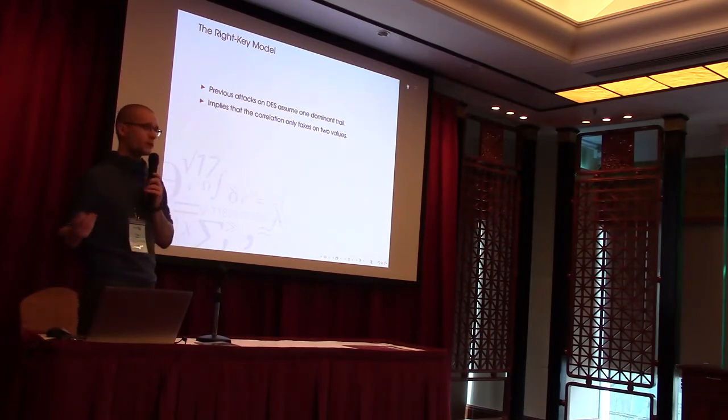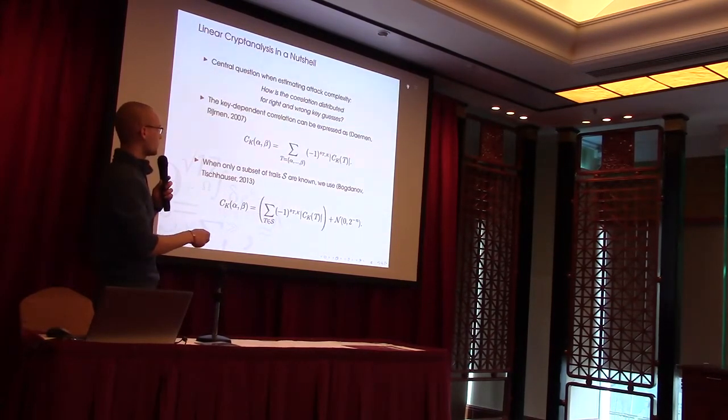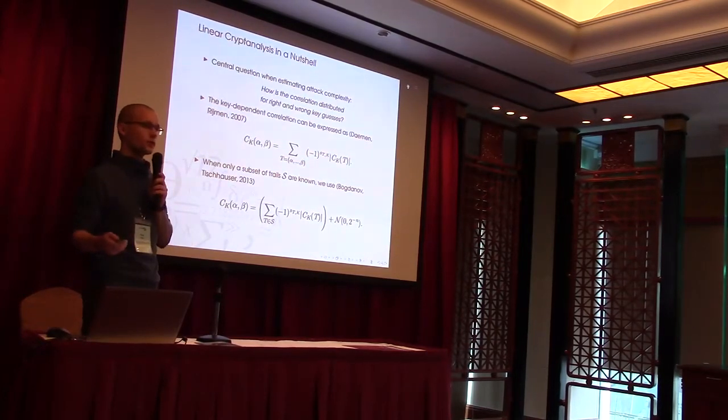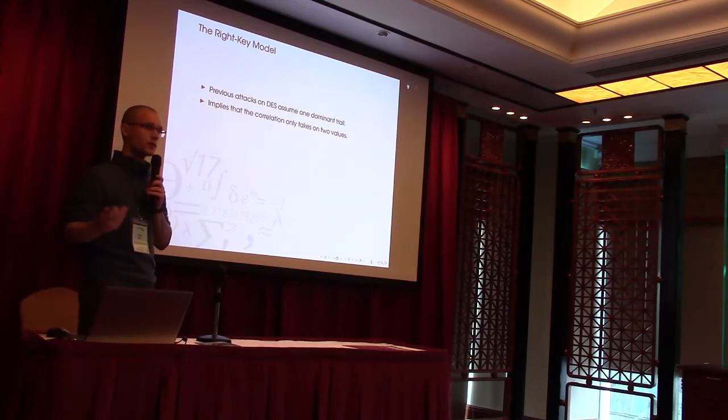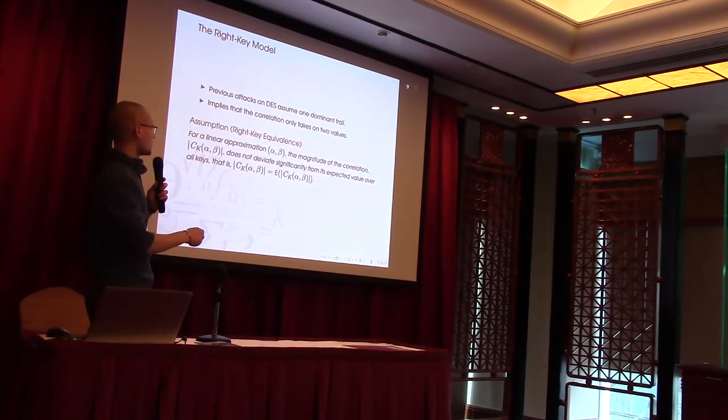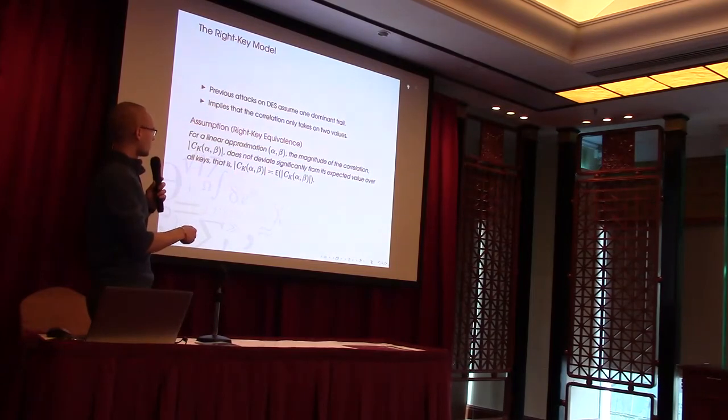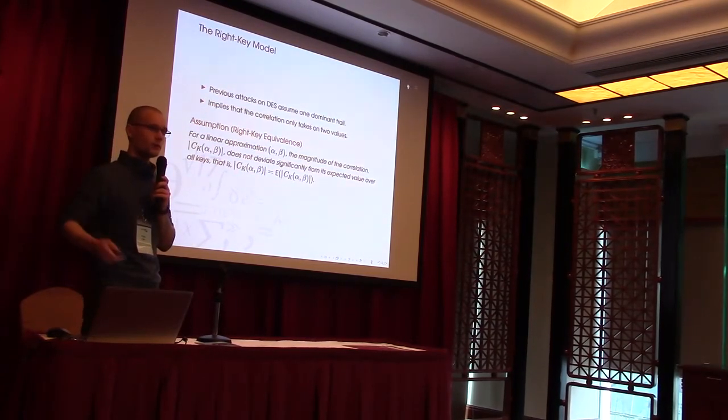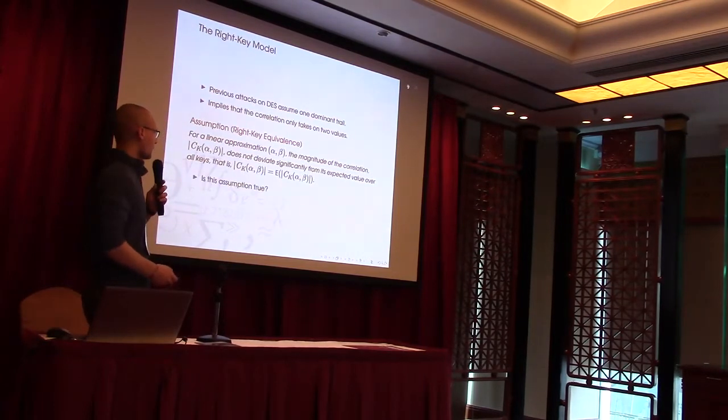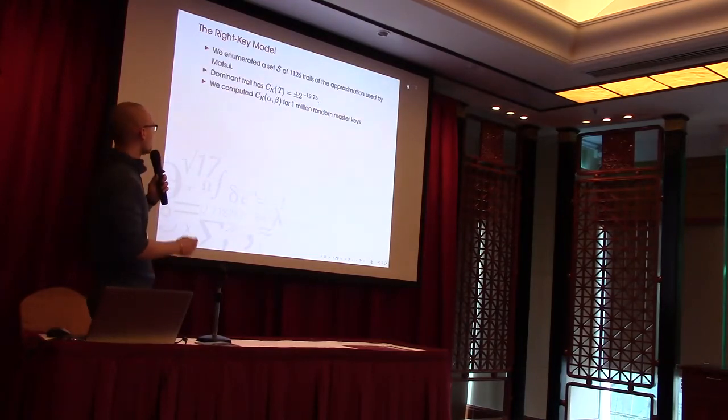What previous attacks on DES considered was just that or assumes that DES has one dominant trail. So it has one trail that is very strong in the sum, so we can approximate this sum by just a single term. What this means is that the correlation value practically only takes two values plus or minus this correlation contribution, which gives us this assumption about right key equivalence. What this basically says is that the expected value of the absolute correlation is fixed. And the question or our question here was, is this assumption actually true?